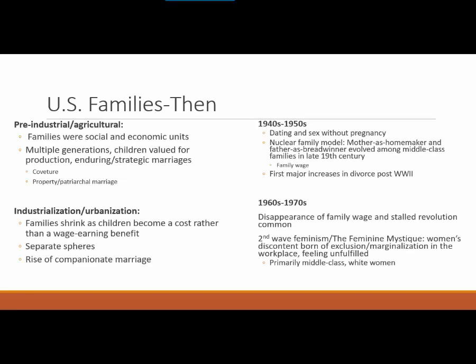Let's talk about what U.S. families were like in earlier time periods. In the pre-industrial agricultural era, families were seen as both social and economic units. They both lived and worked on their family farms. This represented the fact that a lot of these marriages were based around not necessarily love, but much more practical reasons, like the need to adjoin properties or to strengthen ties with another family.